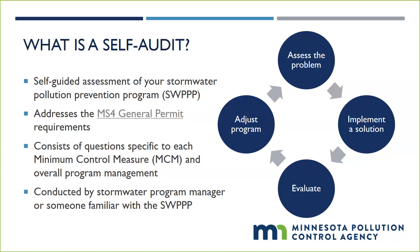In the self-audit, or a similar process, you are evaluating your SWPP against the MS4 general permit requirements and the goals you set for your stormwater program. After the self-audit is complete, you should adjust your stormwater management program to reflect the findings. This is a continuous process — you will be regularly adjusting and adapting your program as you implement new strategies or learn new techniques that are more effective in protecting stormwater within your community.